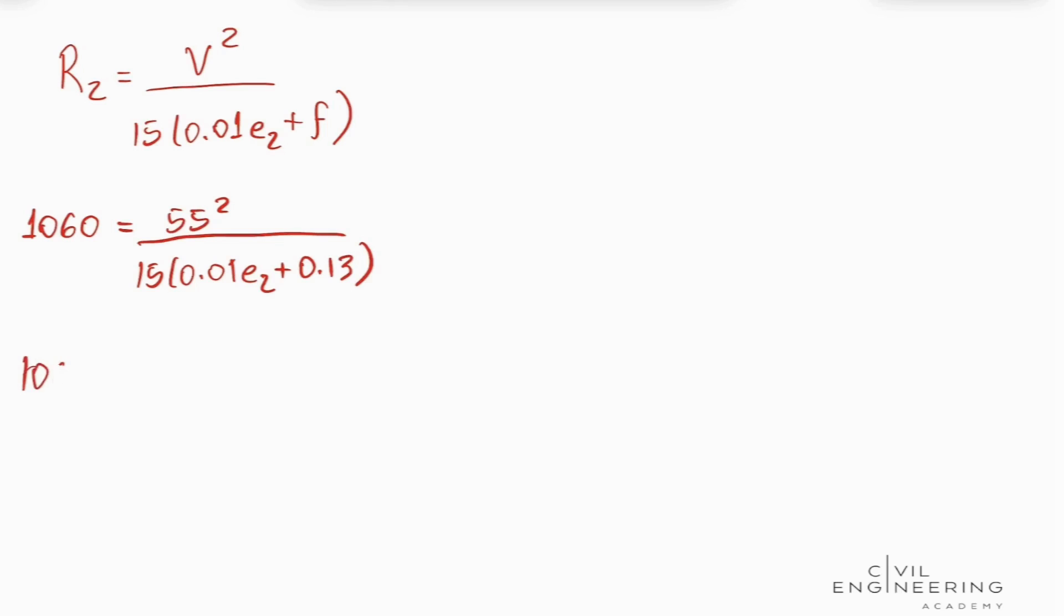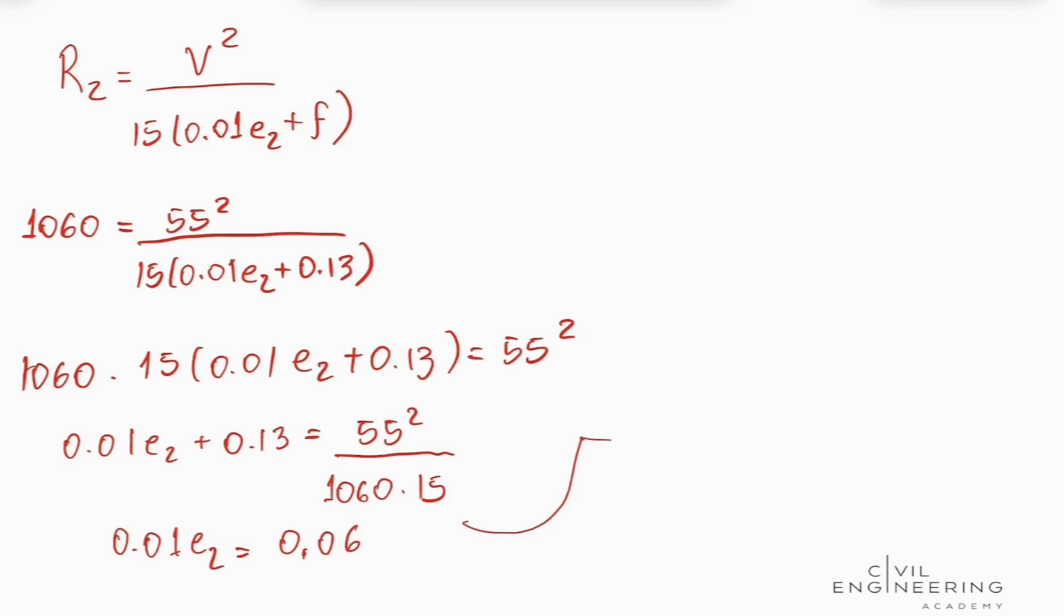We're going to have that 1060 times 15 times 0.01 e2 plus 0.13 is going to equal 55 squared. And then we have that 0.01 e2 plus 0.13 is going to equal 55 squared divided by 1060 times 15. And now we can find that 0.01 e2 is going to equal 0.06, and then we're going to find that our superelevation is equal to 6 percent.